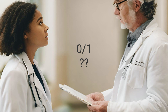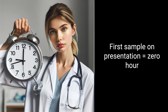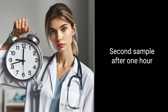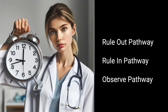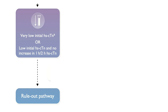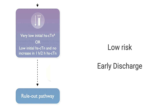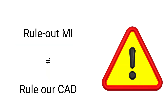The zero-one-hour algorithm refers to the time points at which blood is taken. The first sample is taken when the patient presents to the emergency — that's the zero. The second blood draw is taken exactly one hour or two hours after the first draw. Based on the results, the patient flows into one of three pathways: rule-out, rule-in, or observe. For the rule-out pathway, if the patient presents with very low values, or has low values and no meaningful increase after one or two hours, MI is ruled out. When used with clinical and ECG variables, the zero-one-hour protocol can identify candidates for early discharge. However, ruling out MI does not rule out coronary disease — patients with high-risk features can still have unstable angina and may benefit from an invasive approach.